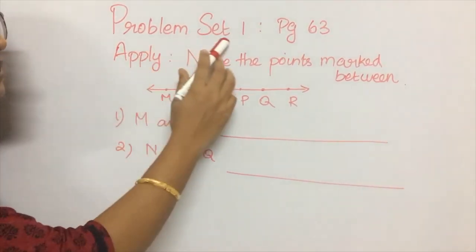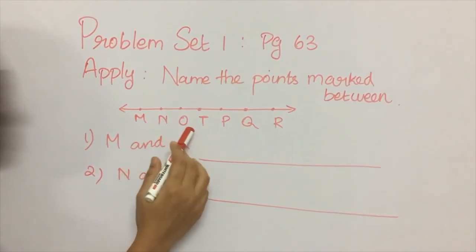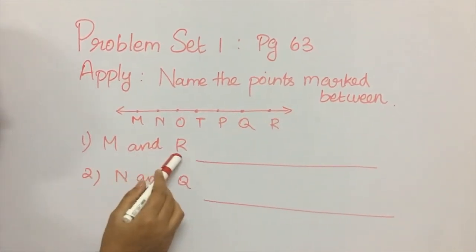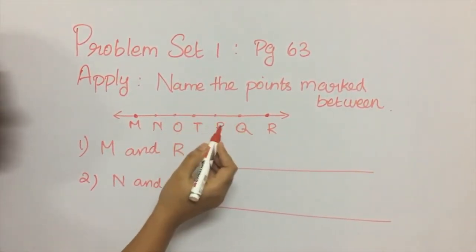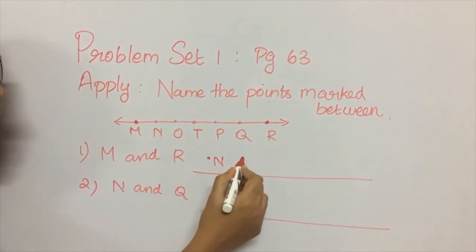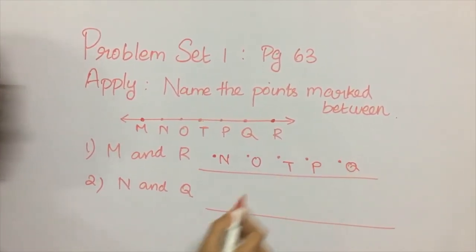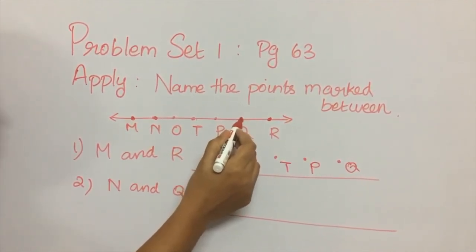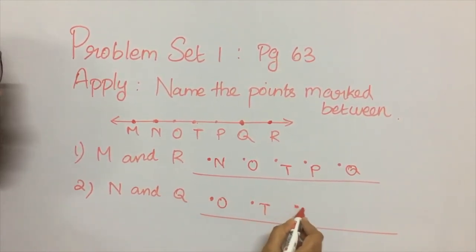Now we are going to learn problem set one. I have drawn a figure — a line with many points on it. The question is: name the points marked between M and R. The in-between points are point N, point O, point T, point P and point Q. Next: what are the points marked between N and Q? They are point O, point T and point P.